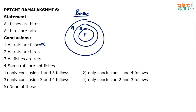These are all very basic questions from syllogisms. Third conclusion: all fishes are rats. Yes, all the fishes are rats. You do anything, you will always find that all the fishes are rats. Even if you draw all the possible diagrams, fishes would always be rats. Because all the fishes are birds and all the birds are rats. All the birds are rats, so wherever we have birds, we can put rats. All fishes are rats is definitely true. Conclusion 3 follows.